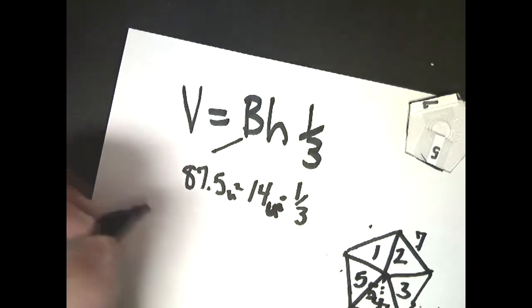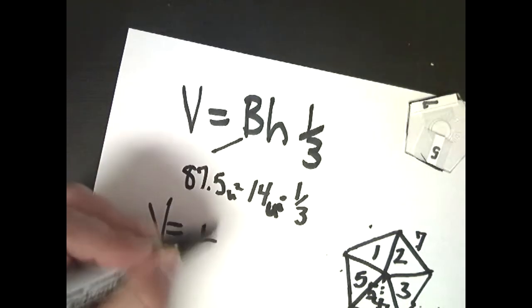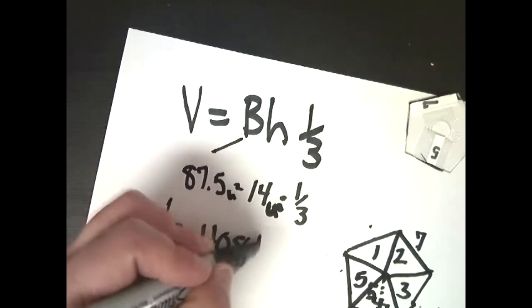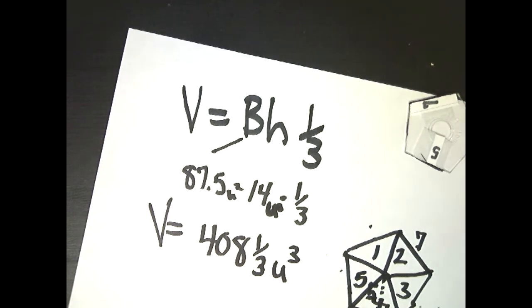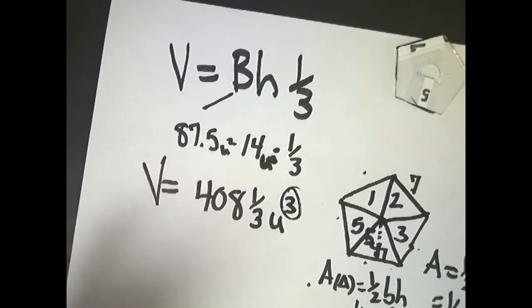And it gives me a final volume of 408 and one-third units cubed. And it's a cubed measure here, or unit is cubed here, because it's a three-dimensional figure. So this represents how many dimensions are in the figure most of the time with units. So there it is.